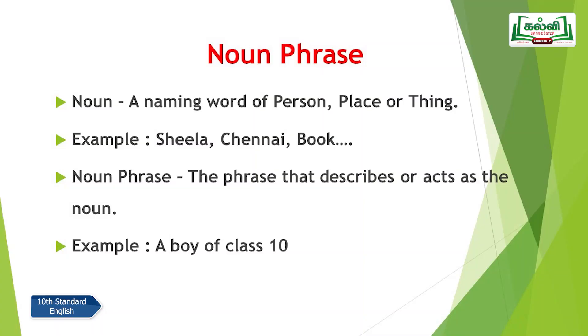Now we are going to see the noun phrase. What is a noun? A naming word for a person, place, or thing — very easy to understand. For example, 'Sheila' is a noun (person), 'Chennai' is a noun (place), 'book' is a noun (thing). Even your own name, taken in a grammatical function, is a noun. That is why it is called a naming word of person, place, or thing.